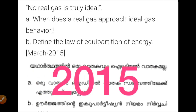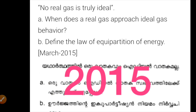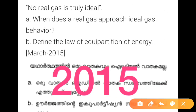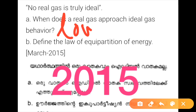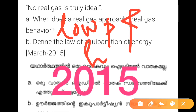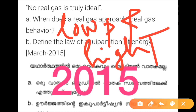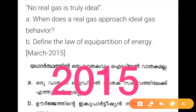In 2015, one statement is: no real gas is truly ideal. The question asks: when does a real gas approach ideal gas behavior? The condition is low pressure and high temperature — low P and high T. The question also involves the law of equipartition of energy and mean free path.